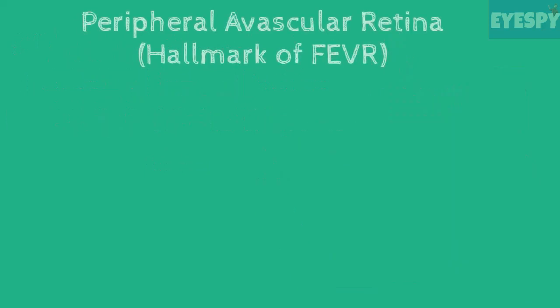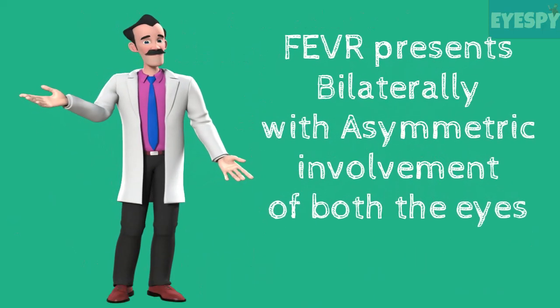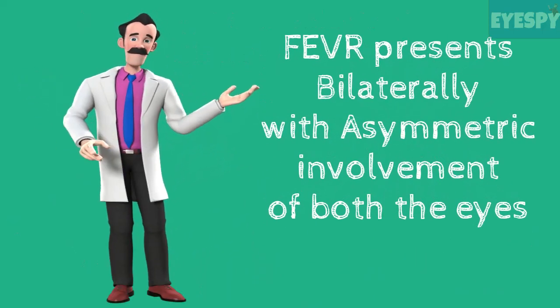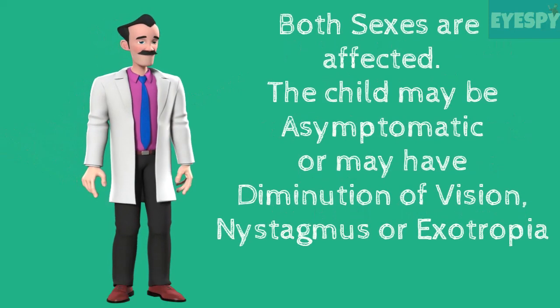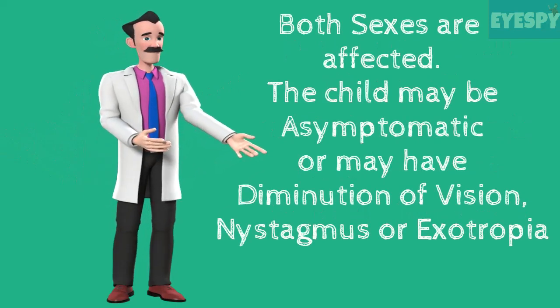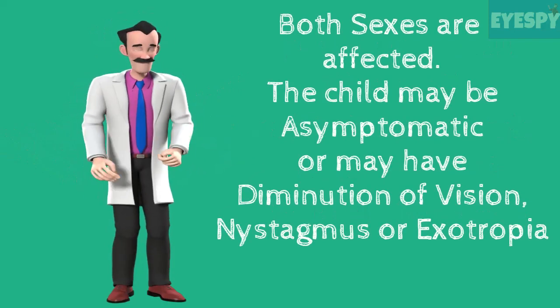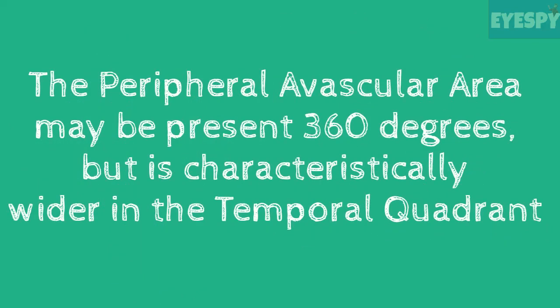Peripheral avascular retina leads to neovascularization, which causes vessel straightening, macular dragging, and retinal detachment. FEVR is a bilateral asymmetric disease of the eyes which affects both sexes, and the child may be asymptomatic or may have diminution of vision, nystagmus, or exotropia. The peripheral avascular areas may be present 360 degrees but are more prominent in the temporal quadrant.